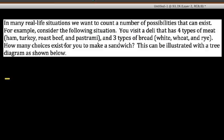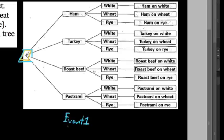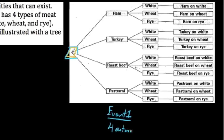In terms of illustrating this, one way we can do this is if you take a look on the right here, we can make a tree diagram. This original point is kind of like where we're starting. Our first choice is what type of meat we want to have — event number one — and event number one has four different outcomes: ham, turkey, roast beef, or pastrami.